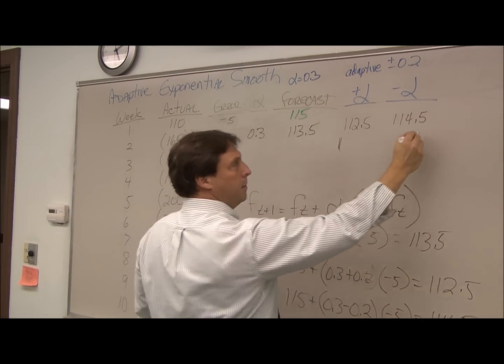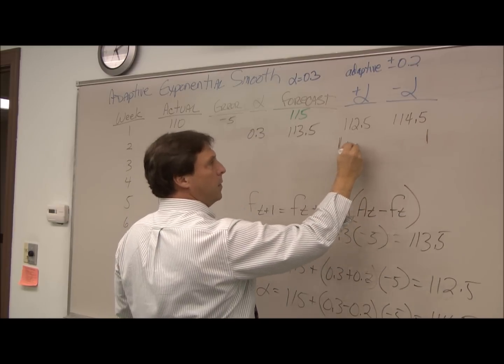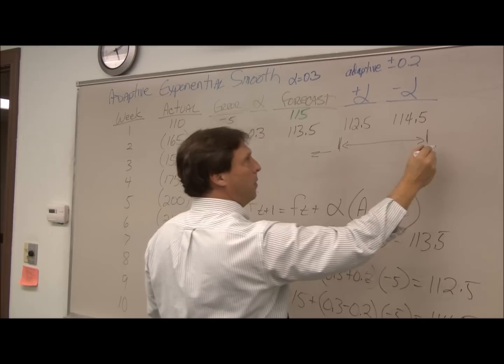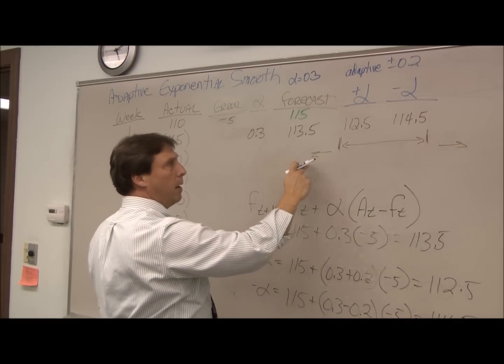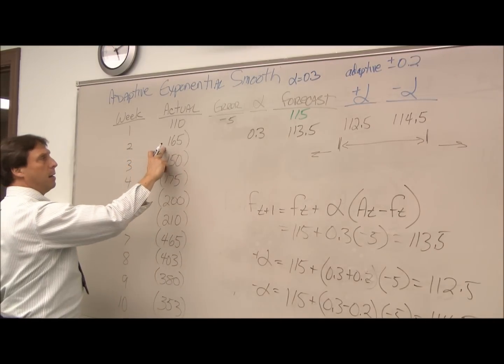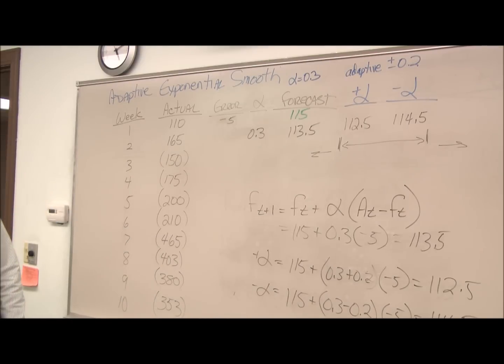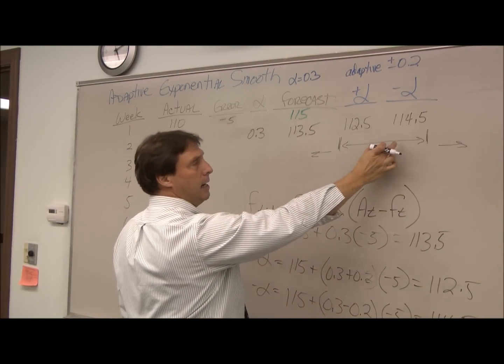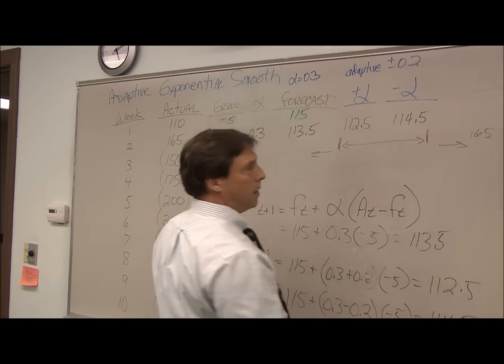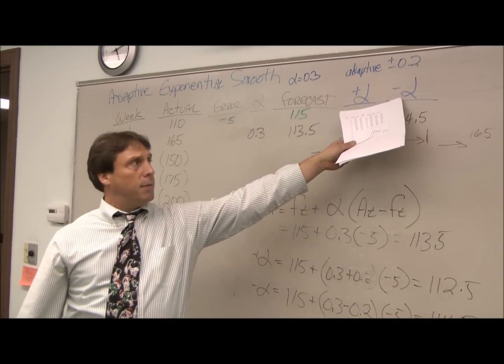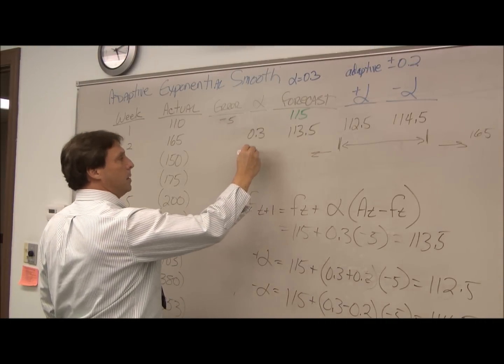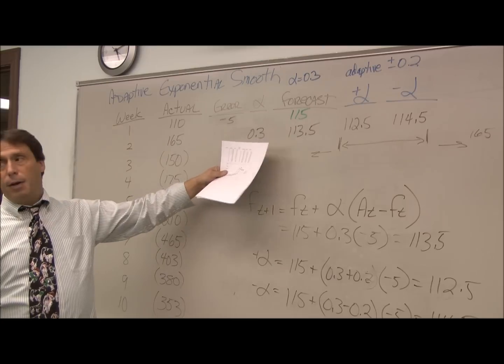What this represents is a range—we have the range between 112 and 114, and of course the forecast sits right in the middle. We have a range for the plus above and a range below. My actual forecast comes in at the end of week 2 at 165. If it just happened to be 113 and was in this range we'd use the same alpha, but in this case 165 comes out over here, so that's telling me I have to use my new minus alpha. So my alpha for the next period becomes 0.1, or 0.3 minus 0.2.